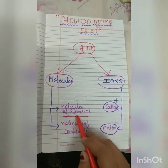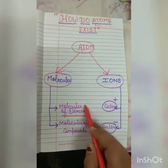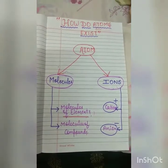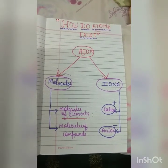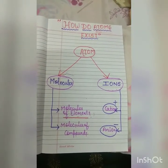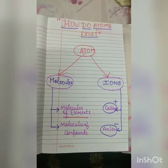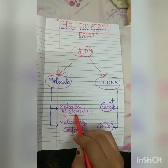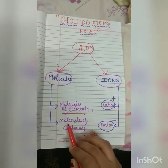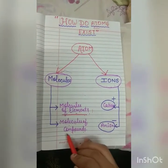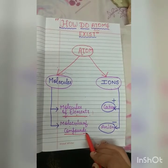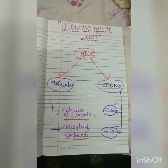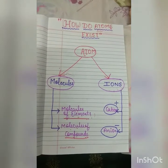The molecules of elements are formed when the atoms of same elements combine together. For example, hydrogen H2 — in this molecule, two atoms of hydrogen combine together chemically and form a molecule of hydrogen. The next, we are having molecules of compounds, which means the atoms of different elements combine together chemically.